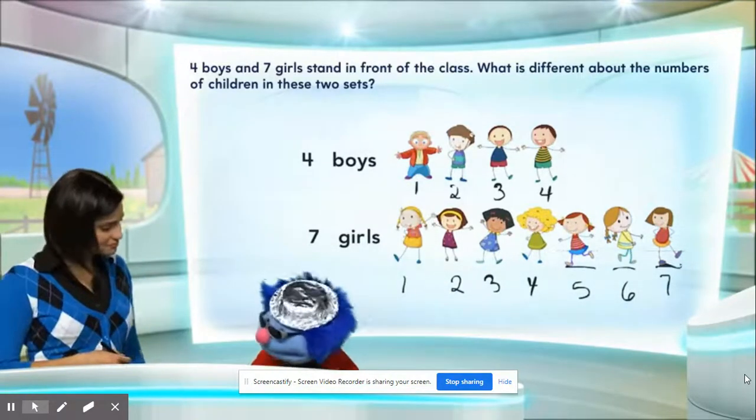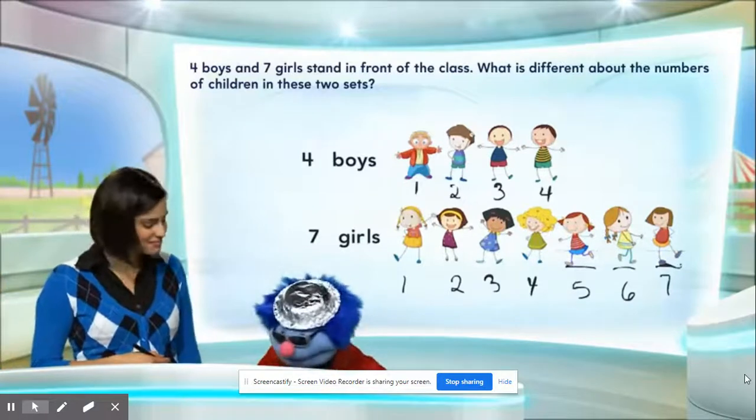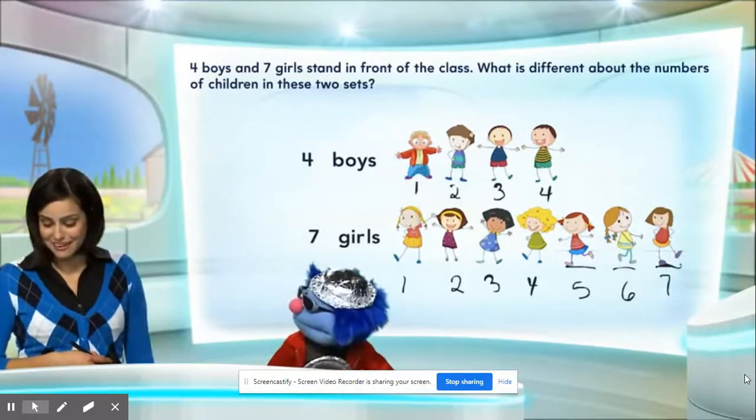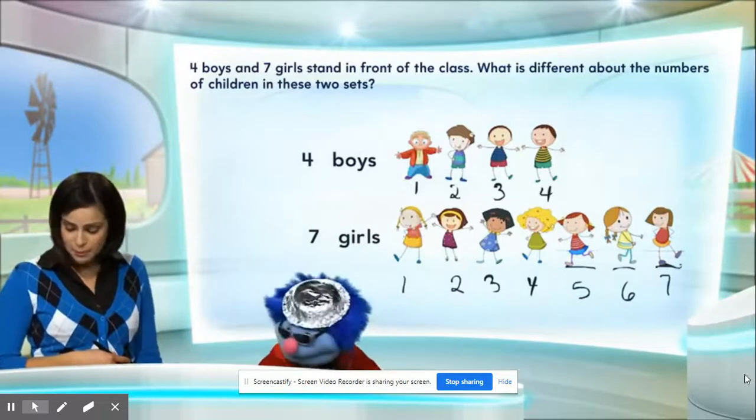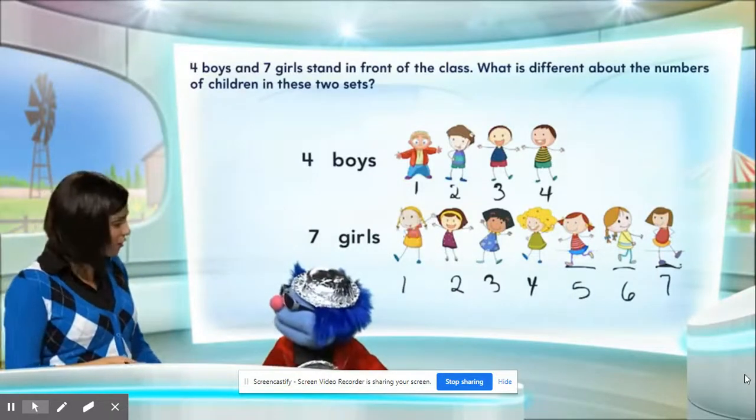Well, it must be the girls because you underlined them. Excellent. The set of girls is greater than the set of boys because seven is greater than four.